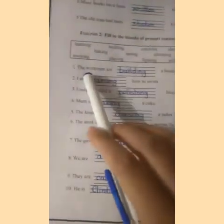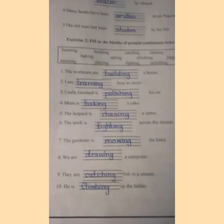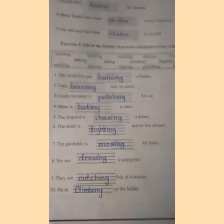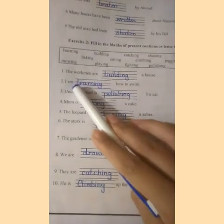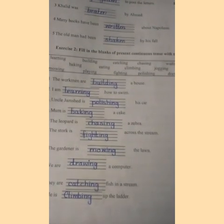The first sentence is: 'The workmen are dash a house.' Workmen can build, so we write 'building' — the workmen are building a house. The second is: 'I am dash how to swim,' so we write 'I am learning how to swim.' The third is: 'Uncle Jimshed is dash his car,' so we write 'Uncle Jimshed is polishing his car.'